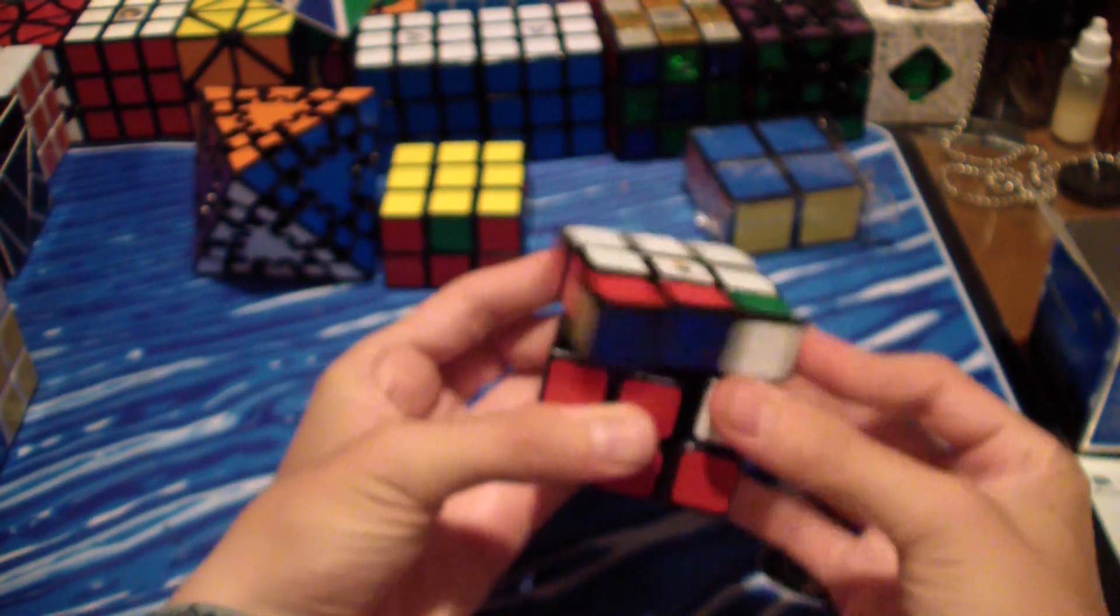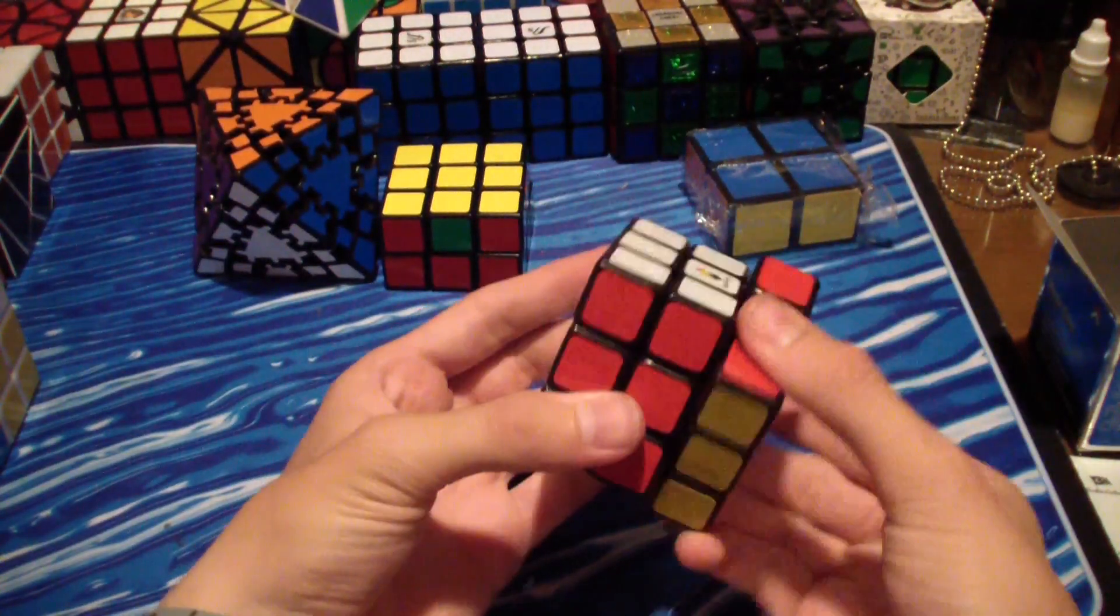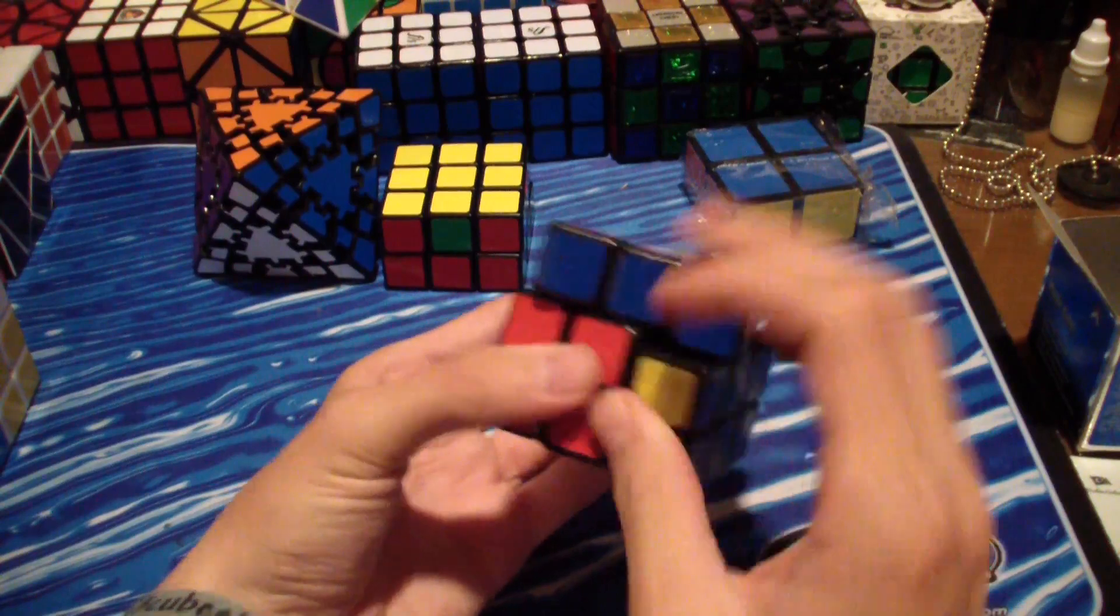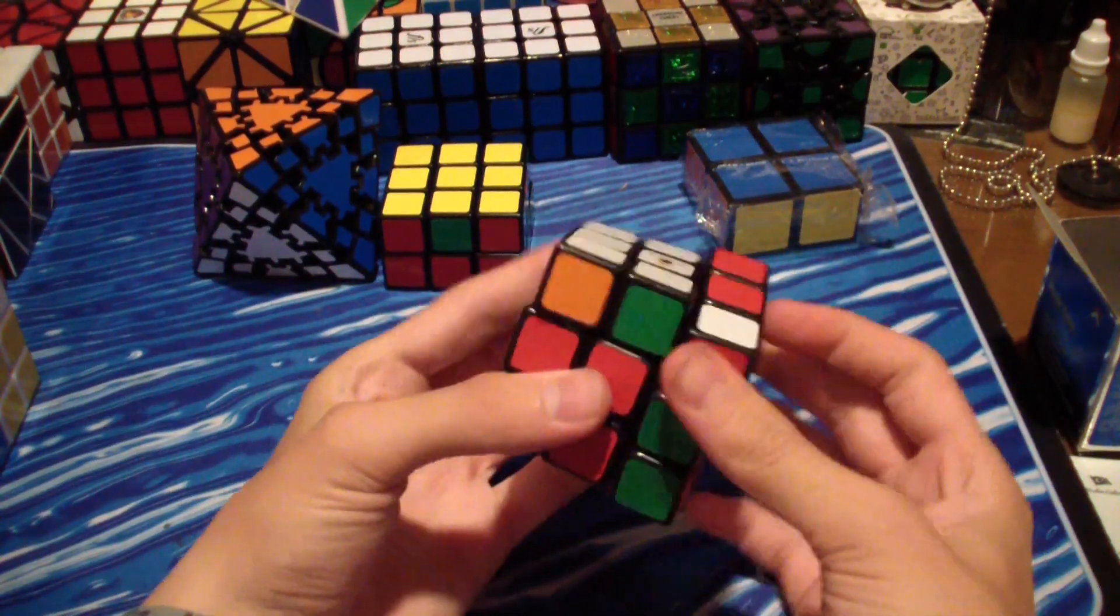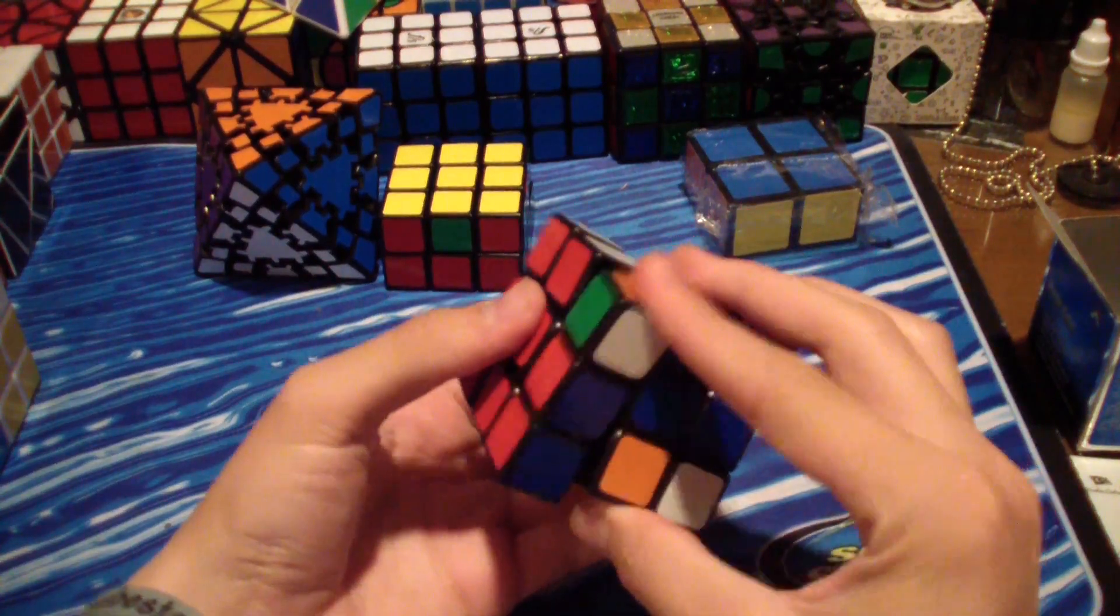Now let's do first turns. First turns: it's tight, slow, it locks up, and it really needs to be tensioned correctly. I'm going to lubricate this with some Algo Lube and also tension this and see if it makes it any better, because right now out of the box it is a horrible puzzle.